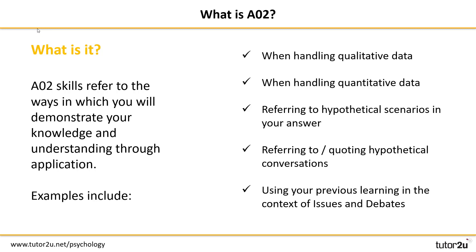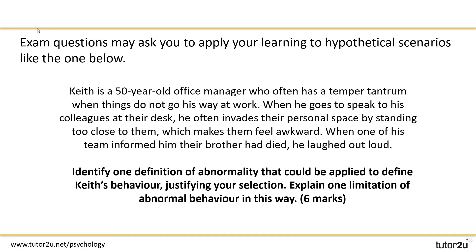AO2 skills refer to the ways in which you will demonstrate your knowledge and your understanding through application — for example, when you handle data, apply your knowledge to conversations or to hypothetical scenarios. They appear quite a bit in each of your exam papers, and there are some other examples on the screen of how you might earn AO2 marks.